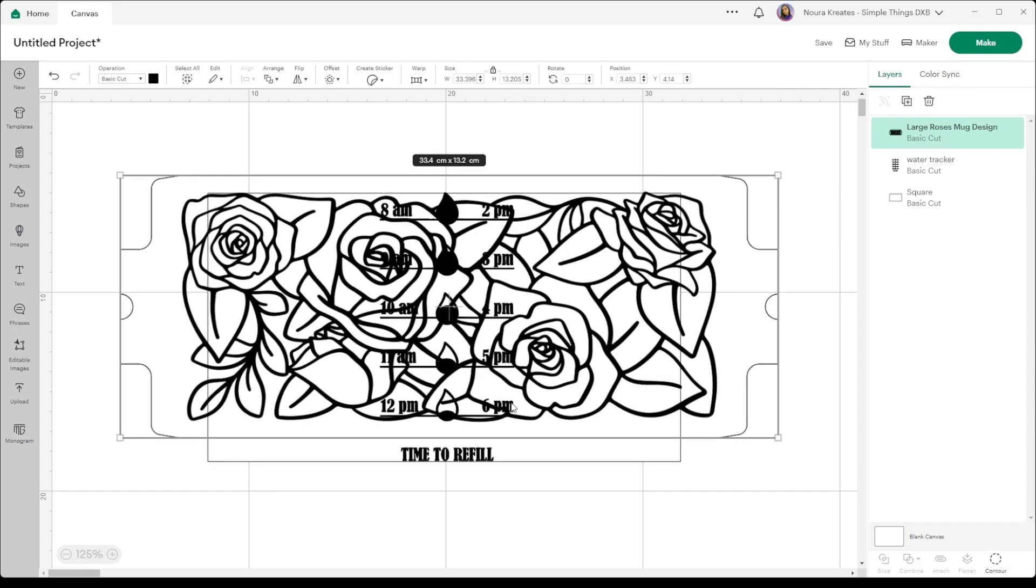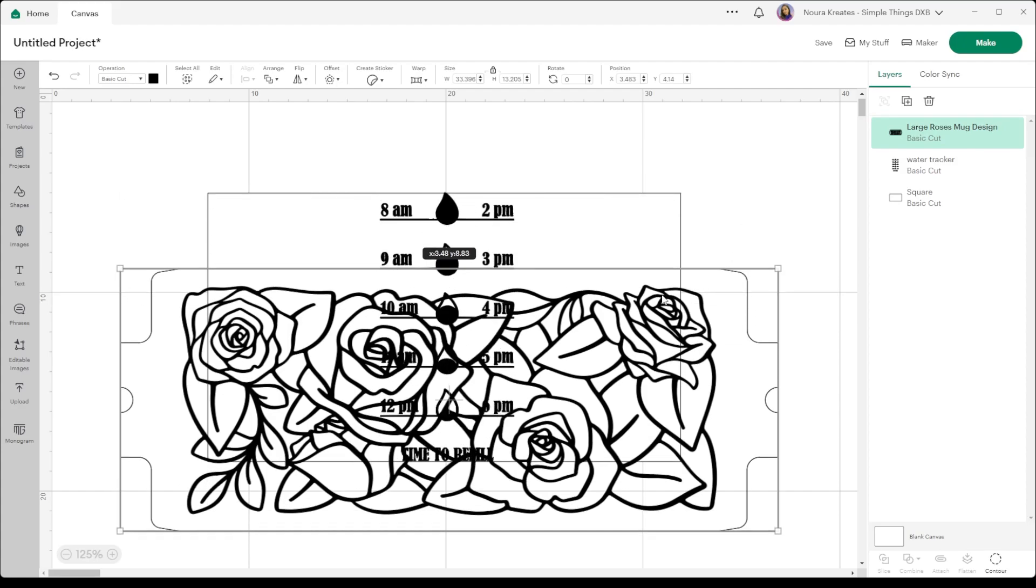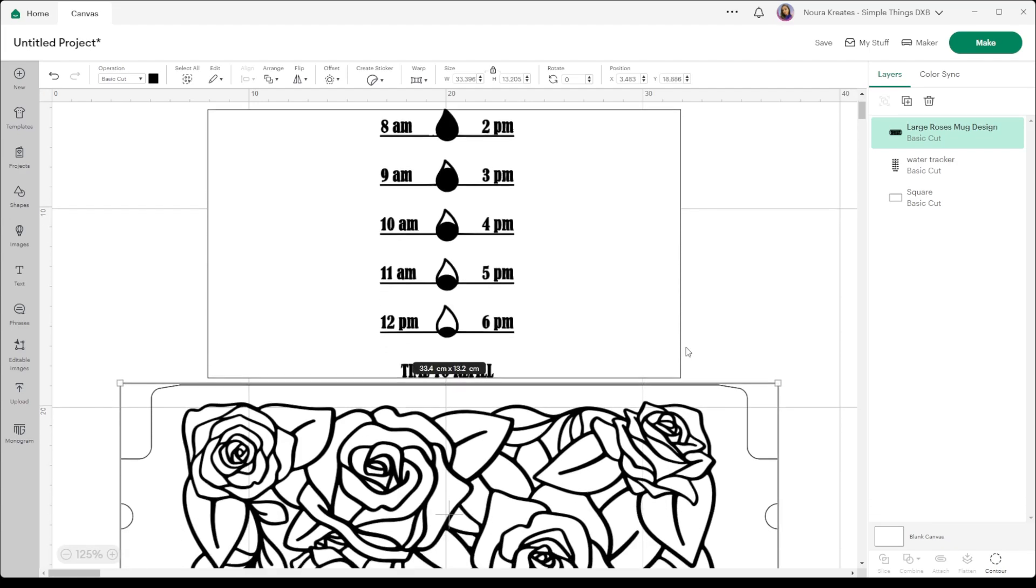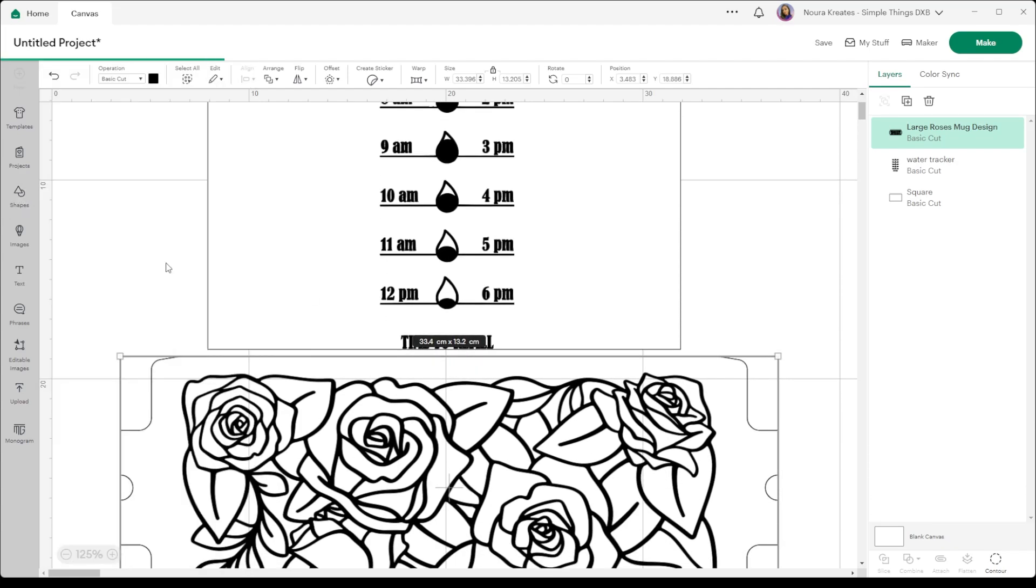You'll understand what I'm doing just in a bit. So basically what I want to do is I'm going to make a space over here so that my tracker will show here in the middle, and then the bottle has this design around it. Let me just put this a little bit down and grab another box.